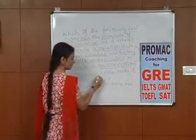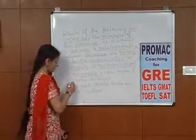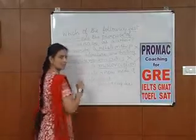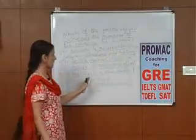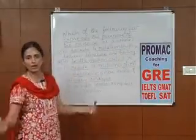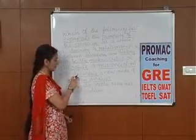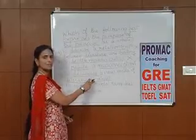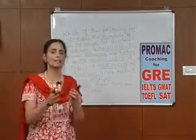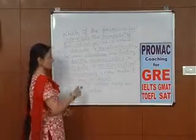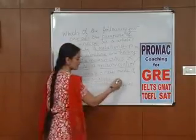Option D is 'to delineate a new mode of literary analysis.' Literary analysis is a very vast subject, just like literature and history. Delineating — that is, analyzing — literary analysis is probably not possible in a 500-word essay. So this option can also be eliminated.